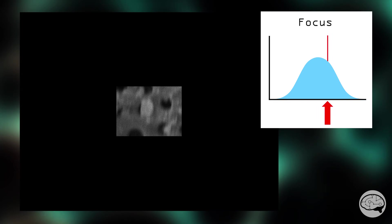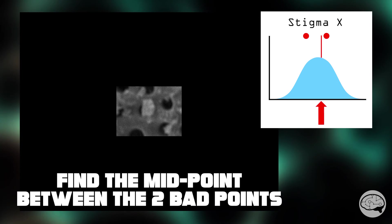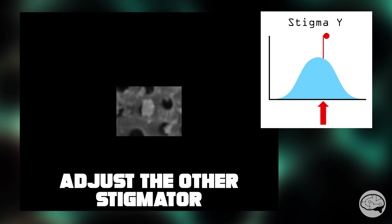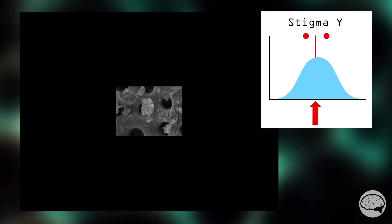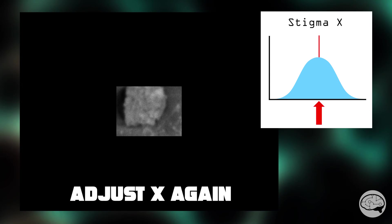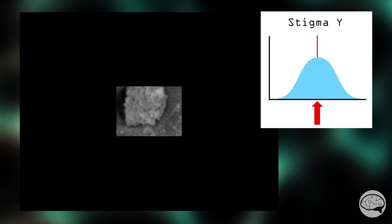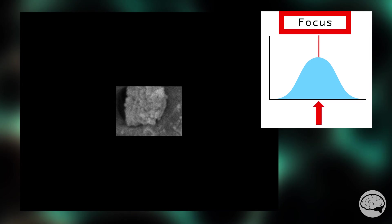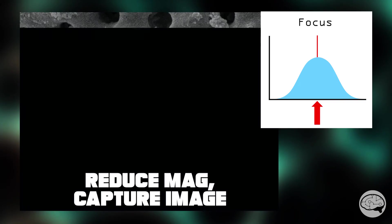This is how the whole procedure looks in the SEM. Changing the focus shows stretching. That means the stigmators are off. No stretching equals focus. We adjust one stigmator in one direction. Find the midpoint in between the two bad points. Adjust the other stigmator in the same way. Go up in mag. Change focus. Look for more stretching. Adjust the X again. Adjust the Y again. Change the focus. Look for more stretching. If you don't find any, reduce the mag, and take an image.